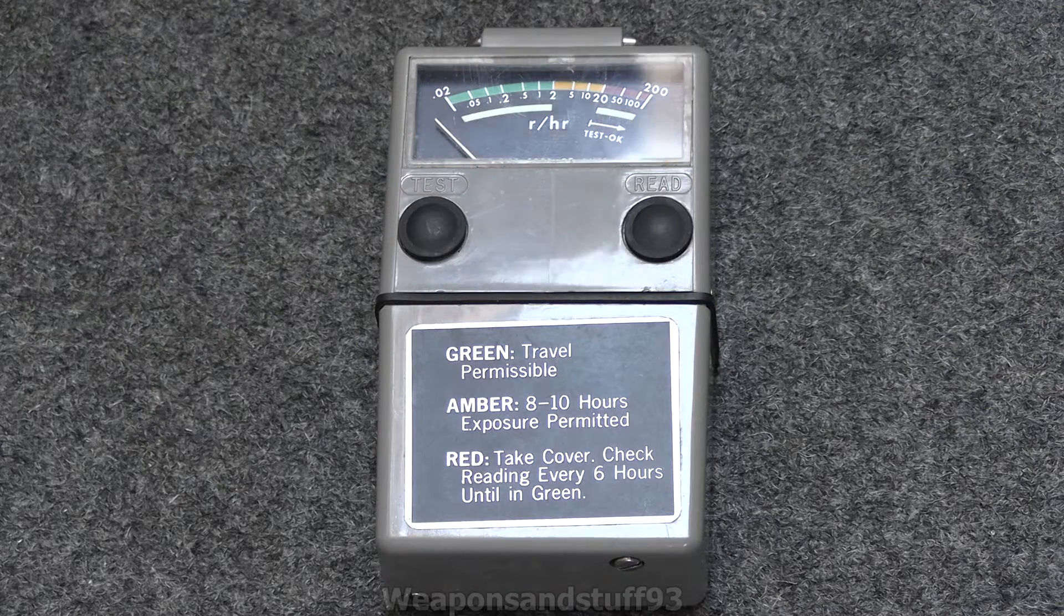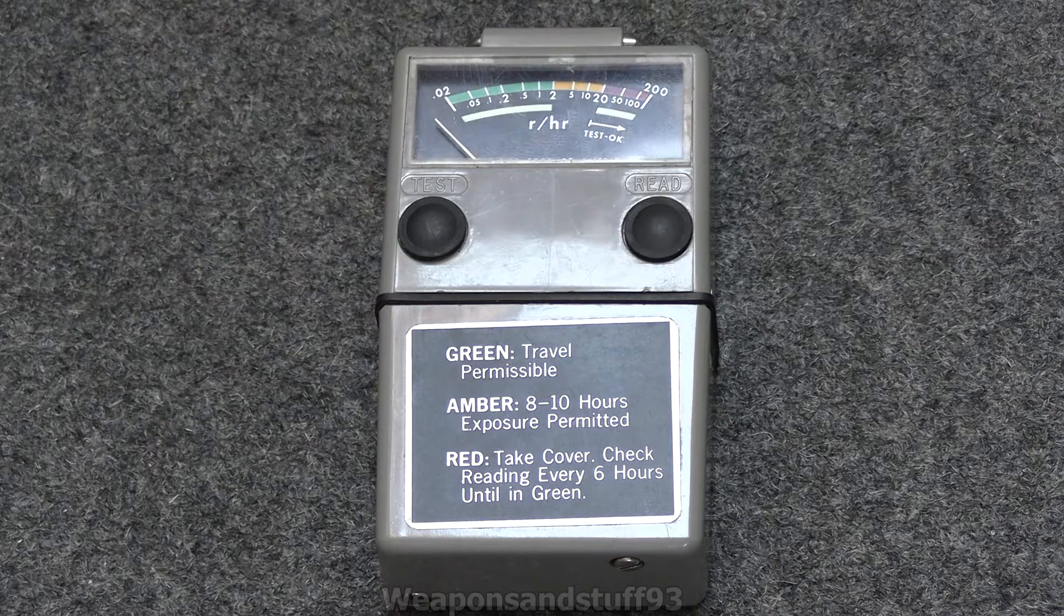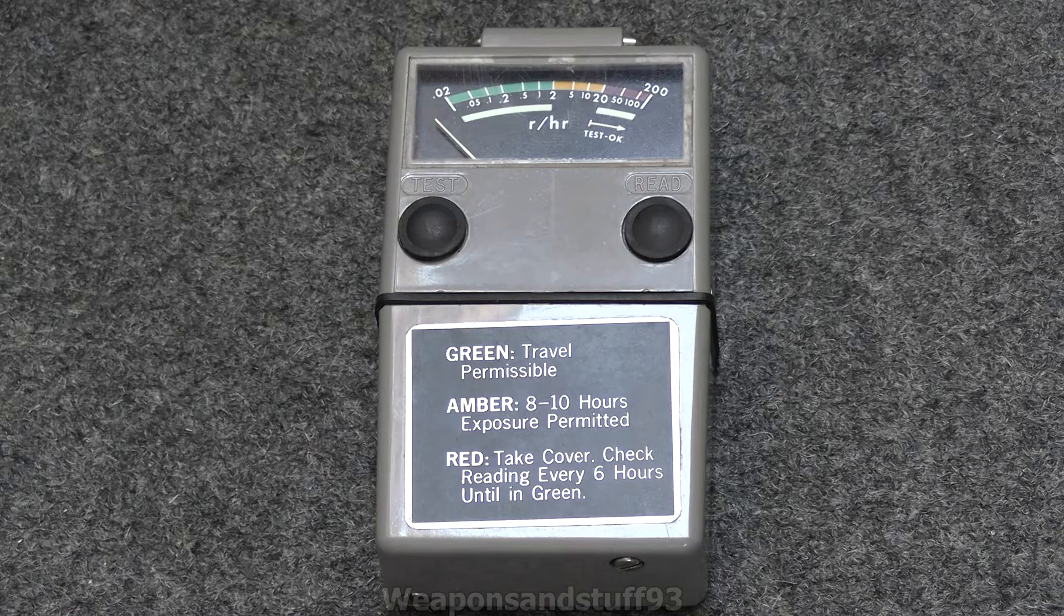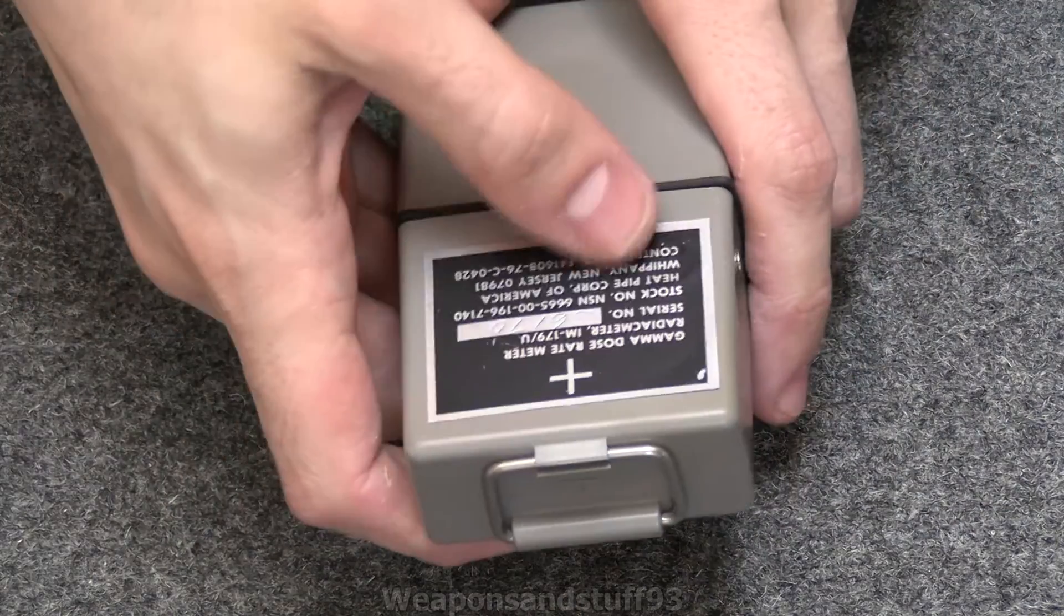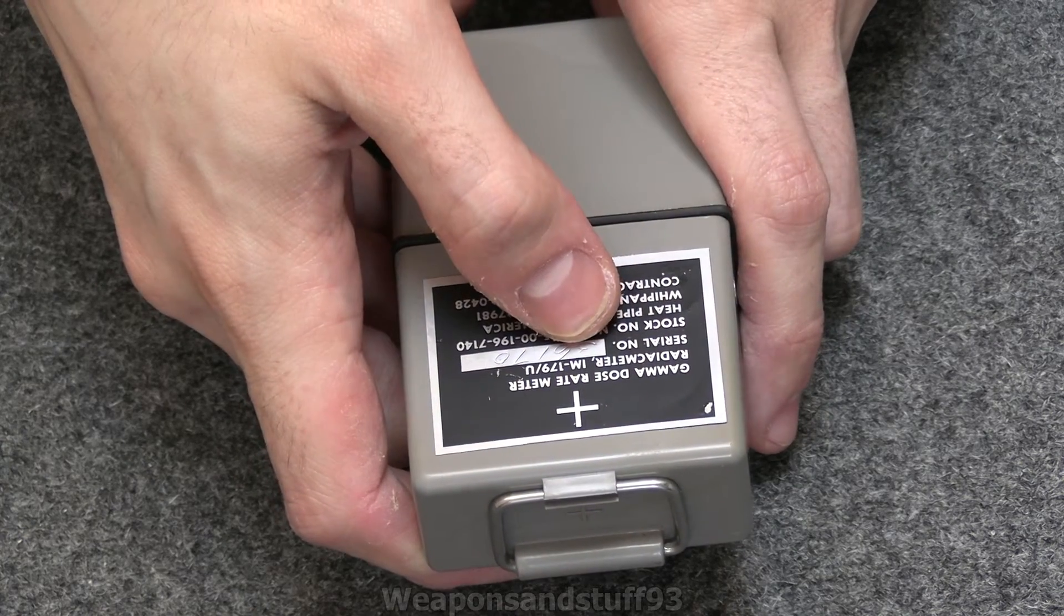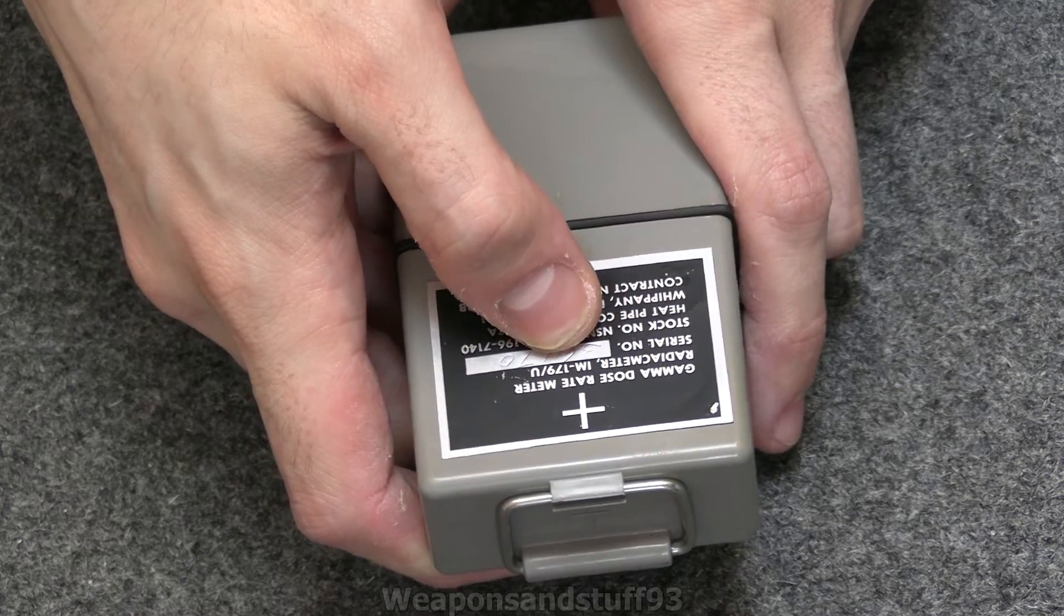Hello, so today's video is going to be on a surprisingly small and nifty little historic radiac meter. So this is a US one. I'm going to have to look at the back to remember the name because it's complicated. Gamma dose rate meter, radiac meter, IM179U.